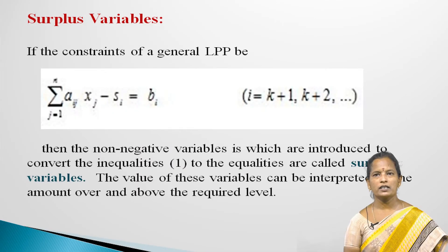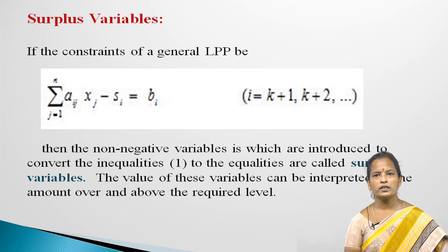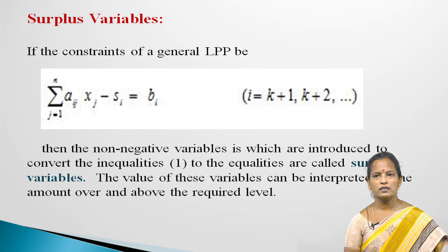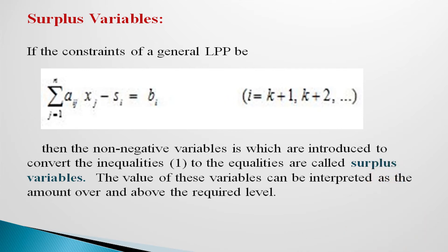Surplus Variables: If the constraints of the general LPP are of the form summation aij xj minus si equal to bi (i from k+1, k+2, ..., and j from 1 to n), then the non-negative variables si introduced to convert the inequalities to equalities are called surplus variables. The value of these variables can be interpreted as the amount over and above the required level.